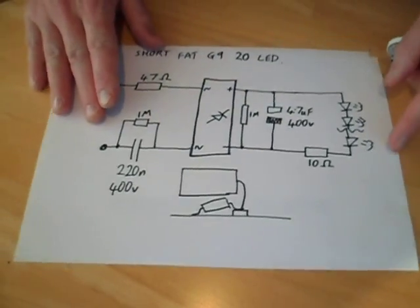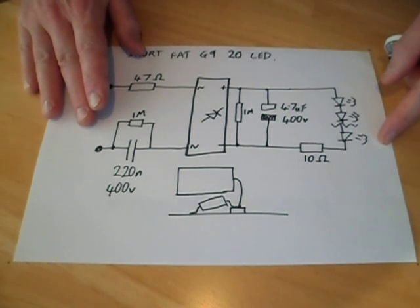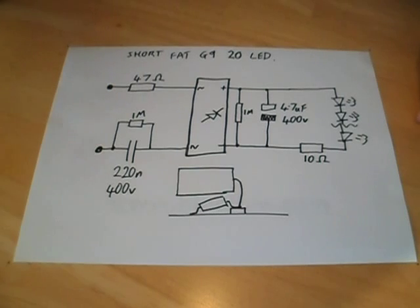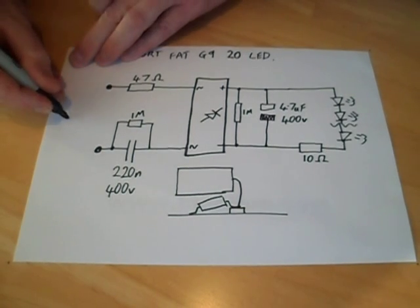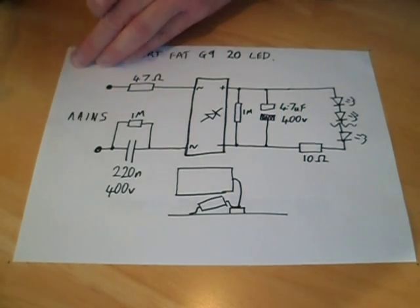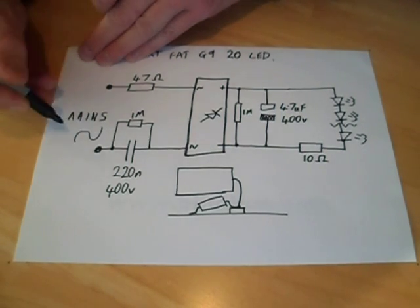So, here's a schematic. Nothing really special here. It's got the 47 ohm resistor coming in from the mains side. I should actually do that. Mains. I'm writing upside down, so I'll probably get this completely wrong. So, that's the mains.